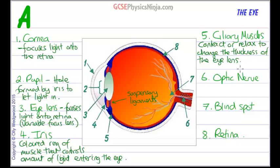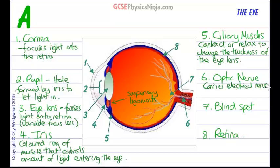Number 6 is the optic nerve. This carries the nerve impulse information that the retina produces when light hits it, channelling those electrical nerve impulses to the brain.